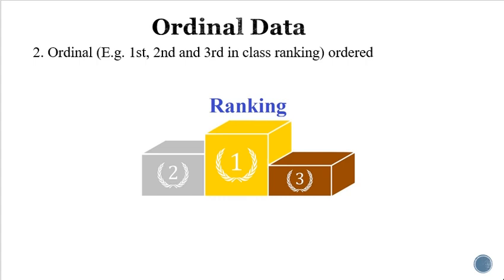The second type is ordinal data. Ordinal data is the data which has some order. The best example for ordinal data is rank — first rank, second rank, third rank. One more example is blood group, where sometimes they assign an order. And when you are explaining steps — step one, step two, step three — that also becomes ordinal data.